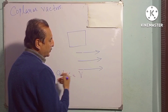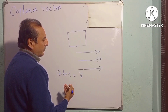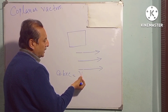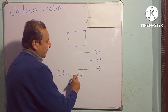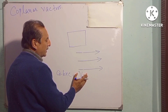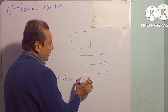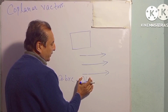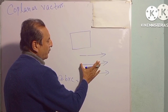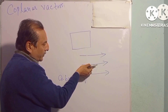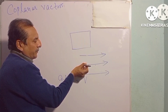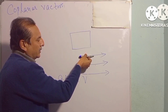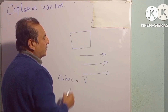اگر یہ تینوں vectors coplanar نہ ہوتے تو یہ volume والے parallelepiped کو show کرتے اور کچھ result آتا۔ لیکن کیونکہ ان تینوں vectors کے triple product سے zero آ رہا ہے، اس کا مطلب ہے کہ parallelepiped کا volume zero ہے۔ جب volume zero ہے تو یہ تینوں vectors ایک ہی plane پر ہیں۔